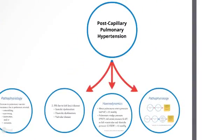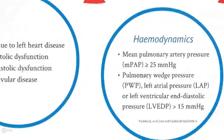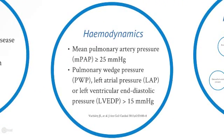Now let's consider postcapillary pulmonary hypertension. This occurs in category 2 pulmonary hypertension, which is due to left heart disease, and this can be broken down into systolic dysfunction of the left ventricle, diastolic dysfunction of the left ventricle, and valvular disease. The hemodynamic definition of postcapillary pulmonary hypertension is again a mean pulmonary artery pressure at rest of greater than or equal to 25 mmHg, but this time pulmonary wedge pressure, left atrial pressure, or left ventricular end-diastolic pressure must be greater than 15 mmHg.